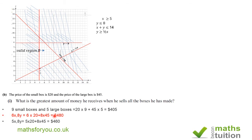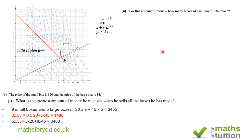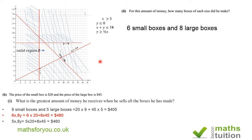The maximum amount of money he receives is $480. The second part of the question asks: for this amount of money, how many boxes of each size did he make? As we've seen from our working out, the answer is six small boxes and eight large boxes.